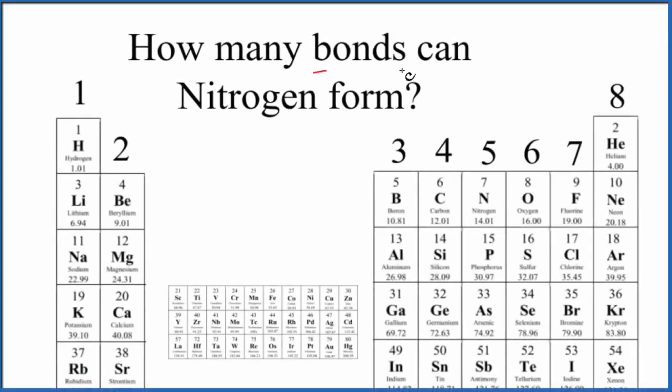The question is, how many bonds can nitrogen form? So we're talking about covalent bonds here. If we look at nitrogen on the periodic table, let's just draw nitrogen, that's the element symbol. Group one on the periodic table has one valence electron, two valence electrons.